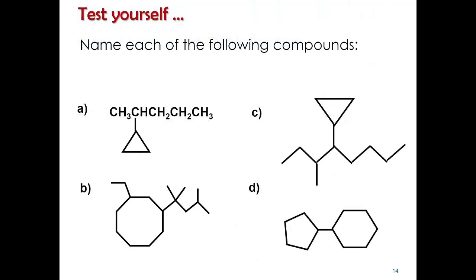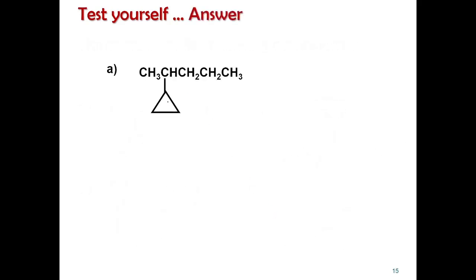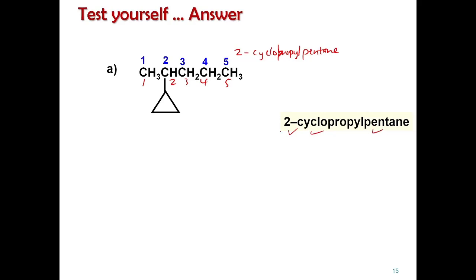Try to test yourself with the practice compound — pause the video, attempt the answer, then proceed. The answer: the chain has five carbons — pentane — and a cyclopropyl ring is attached at carbon two, so the name is 2-cyclopropylpentane.